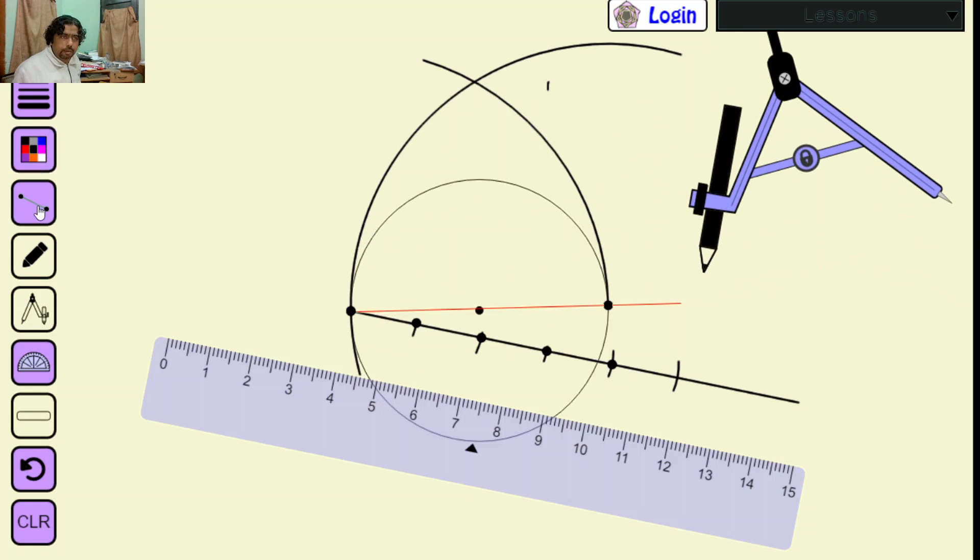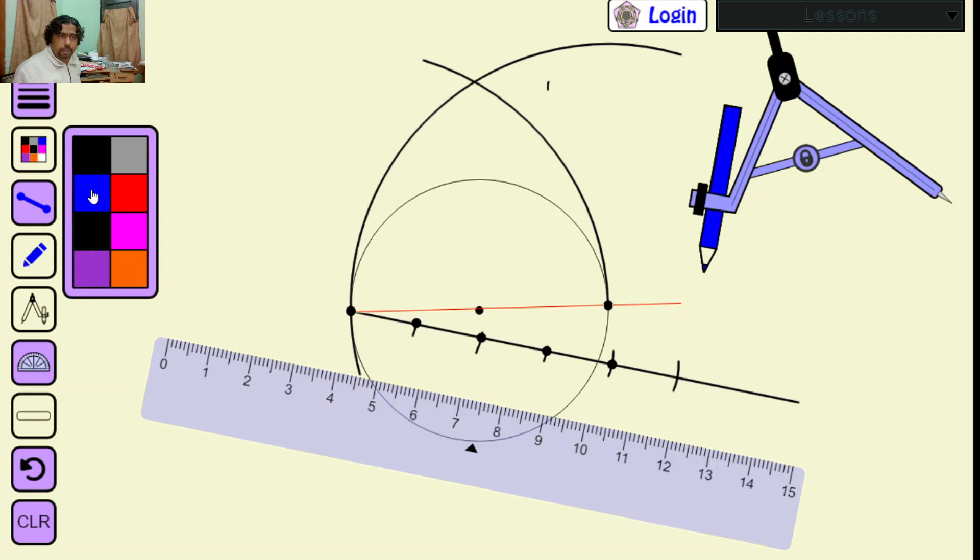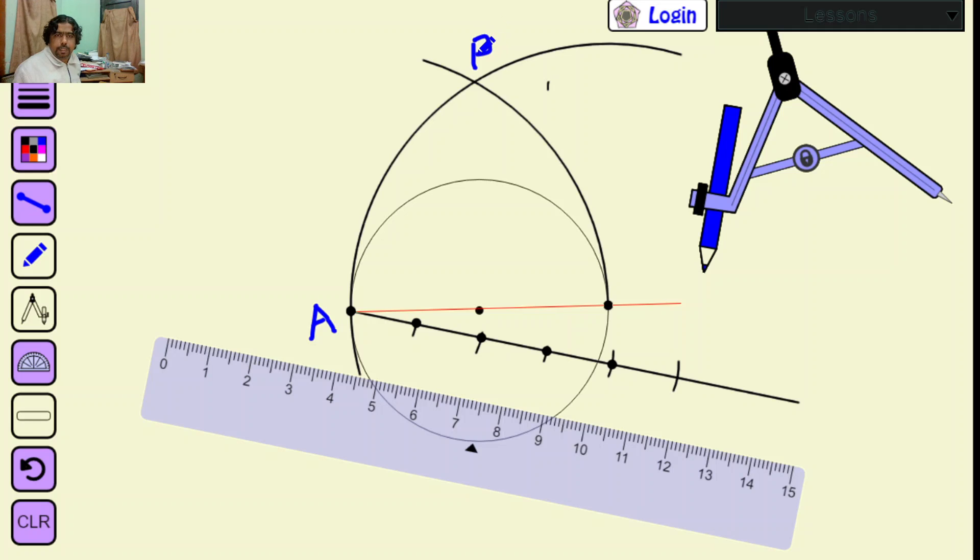Let us give some names to all this with a different color, say blue. This was A, this is point T, and this is point P. This is the naming I have done.